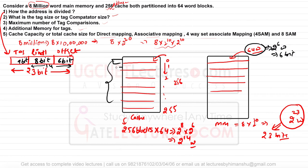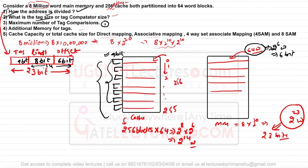So for direct mapping, the tag is 9 bits. This answers questions 1 and 2. For question 3, since it is direct mapping, each block can only map to one cache line, so only 1 tag comparison is required. For question 4, additional memory for tags: the tag is 9 bits and there are 256 cache lines, so total tag memory = 256 × 9 bits.